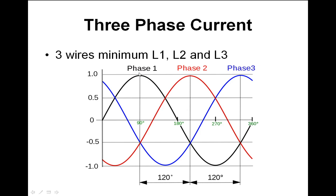So the peak voltage is 339 volts. When we take the RMS voltage, we multiply 339 by 0.707 — that's the square root of two over one — and we get 240 volts. That's where our 240 volts RMS comes from. RMS stands for root mean square. We get an average value of about 240 volts with respect to the zero volt line.